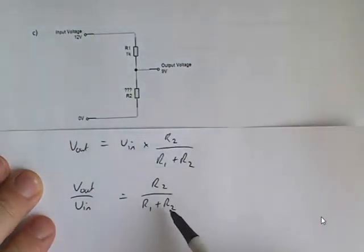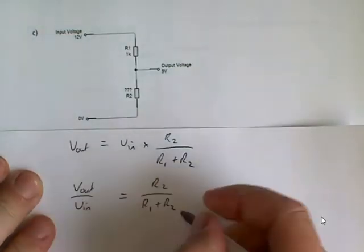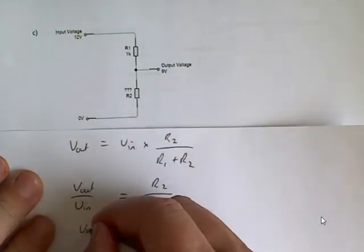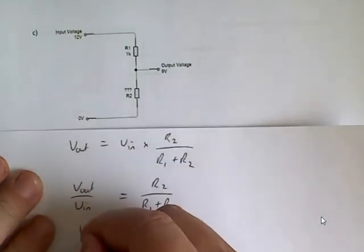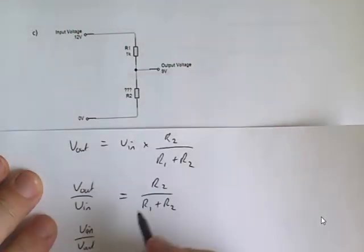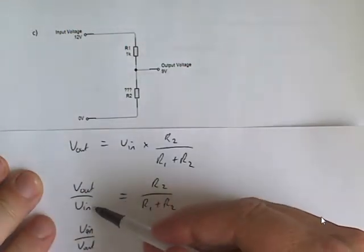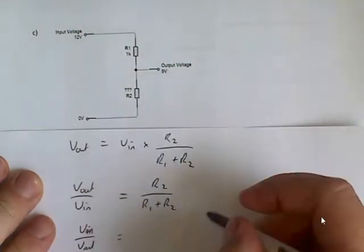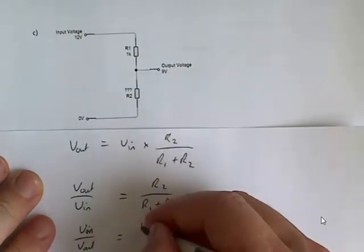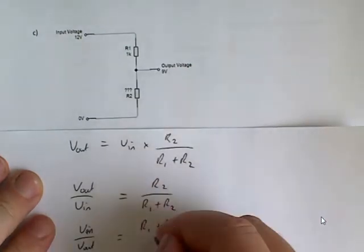What I'm going to do now is inverse both sides, so basically I'm going to flip them. So V in over V out, so I'll just swap the numerator and denominator there. And I need to do that same for both sides, R1 plus R2 over R2.